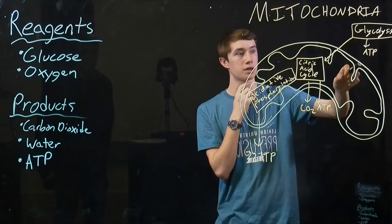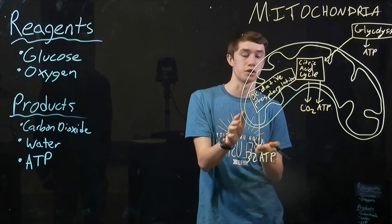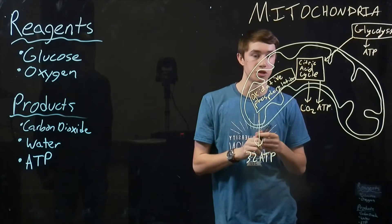At each step, you have a small amount of ATP being generated until you get to oxidative phosphorylation, where about 32 ATP are generated.